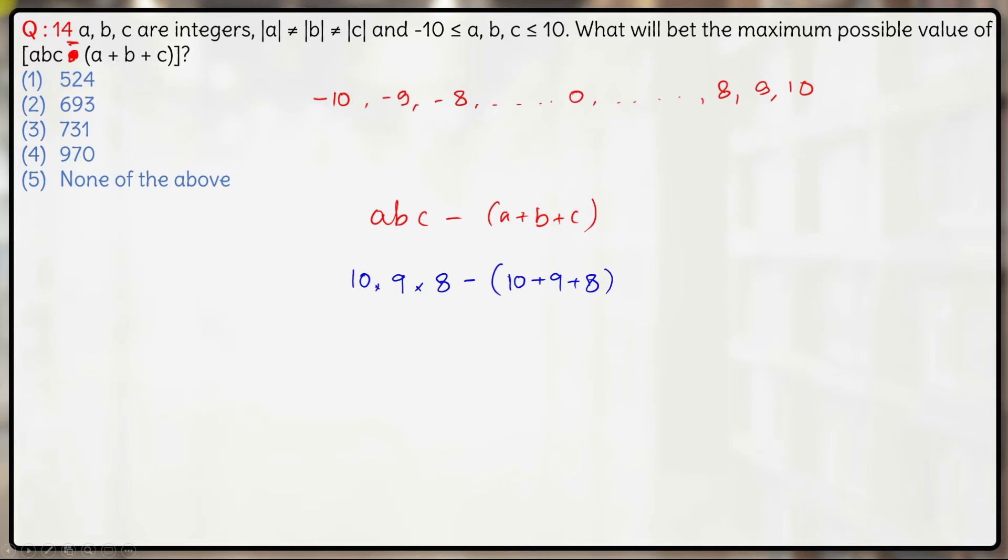Now if two of them are negative, so either AB, BC or AC can be negative. So let's say if A and B are negative, so we'll have minus 10 into minus 9 into 8 minus of minus 10 minus 9 plus 8. This is when A, B are negative.